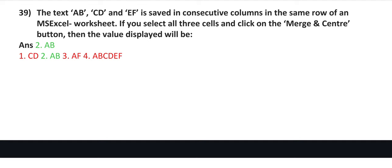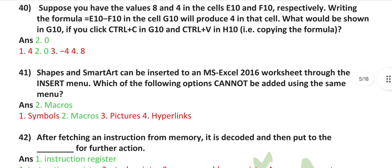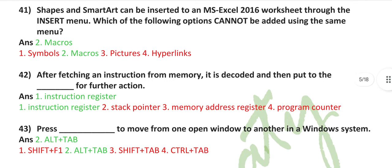Suppose you have the value 8 and 4 in the cells E10 and F10 respectively. Write the formula equals E10 minus F10 in the cell G10. This will produce 4 in that cell. How would it be shown in G10 if you press Control plus C in G10 and Control plus V in H10, that is copying the formula? It inserts 0.